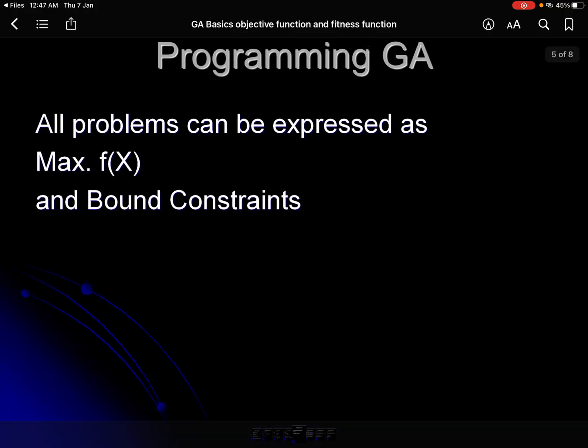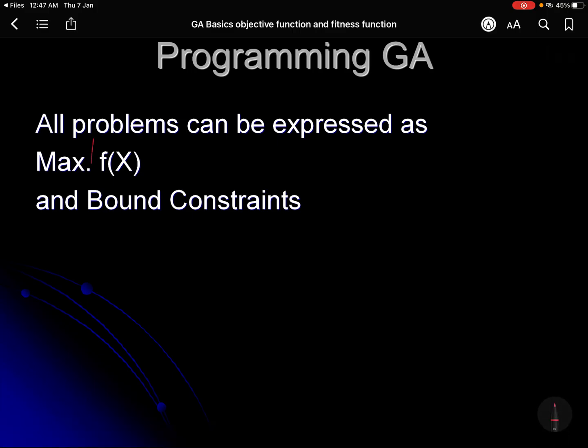So this is what we have seen: the assumption here is that if you want to solve all problems with GA, all problems can be expressed as minimize f(x) — or maximize, as the case may be — with bound constraints. In any case, other constraints can be incorporated into the form of f(x). That is how the objective function and constraints will appear for a GA.